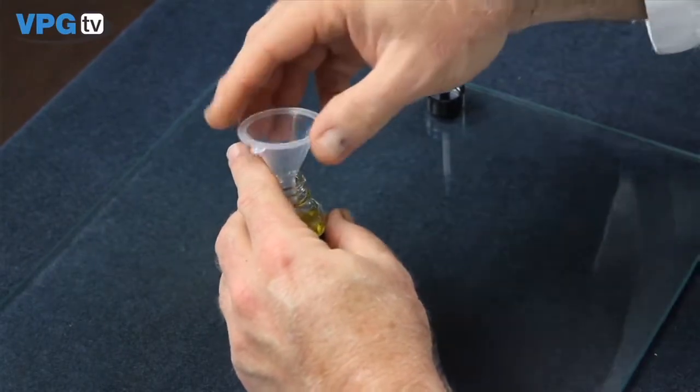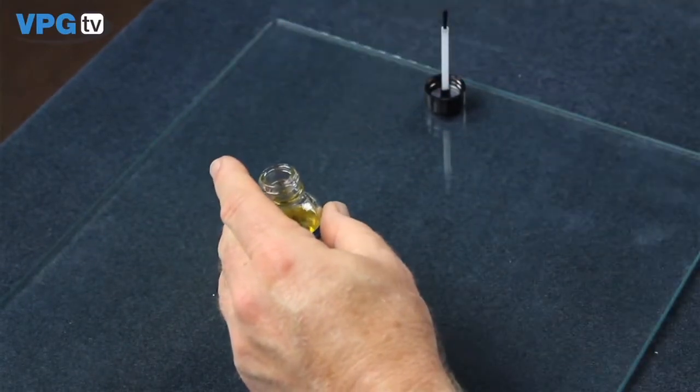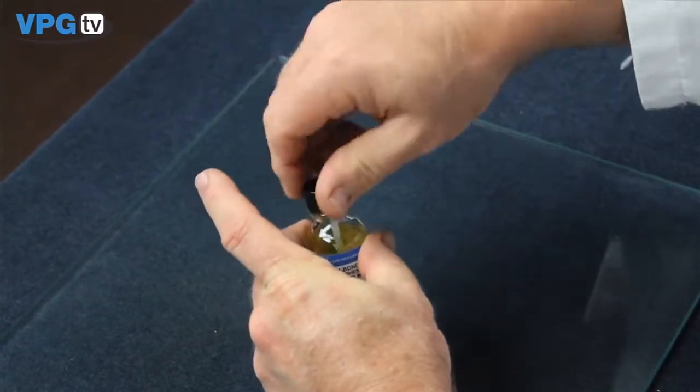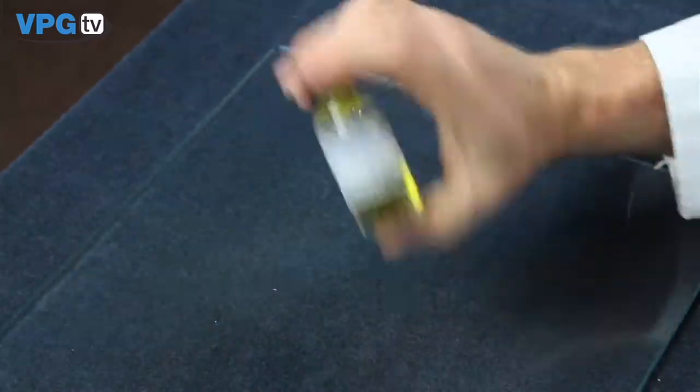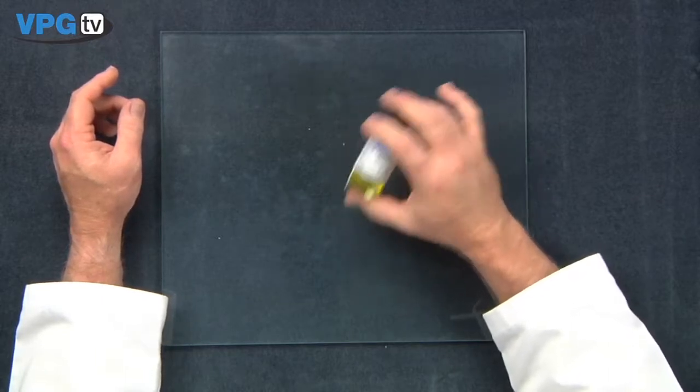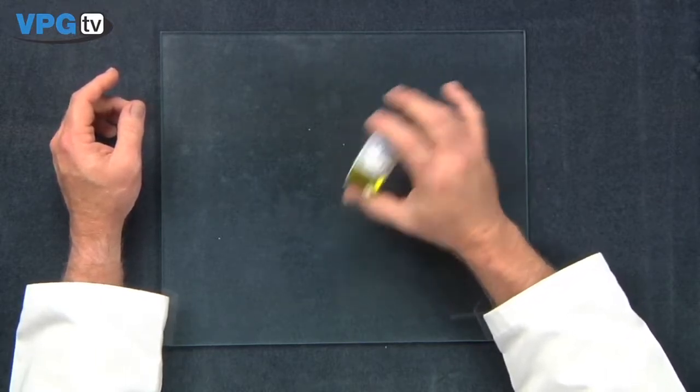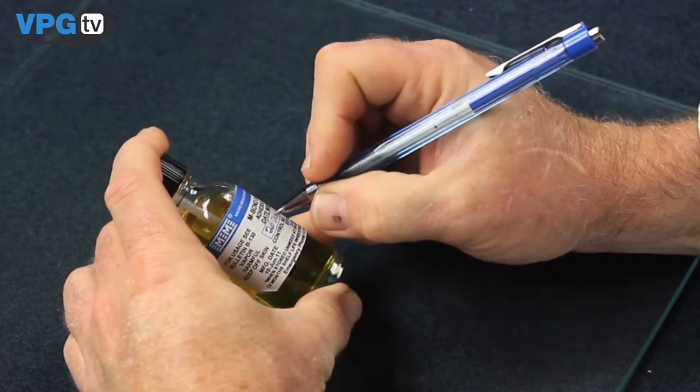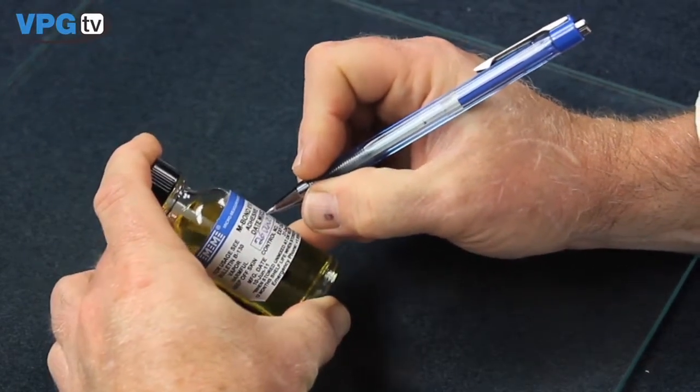Discard the funnel and empty bottle. Tightly recap the adhesive with the provided brush cap applicator. Vigorously shake the mixture for approximately 10 seconds. Be sure to record the current date on the label as the M-Bond 610 has a mixed pot life of six weeks at room temperature.